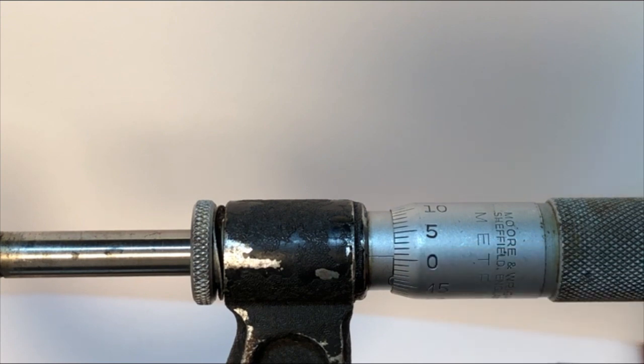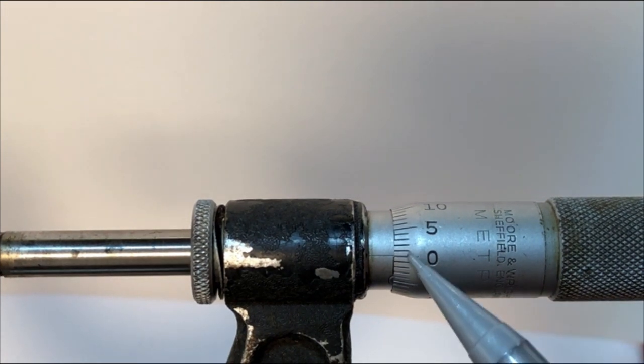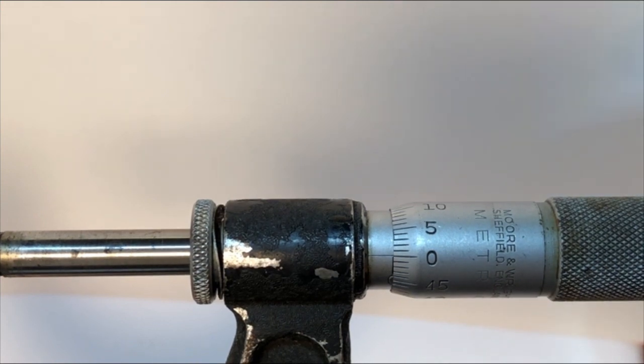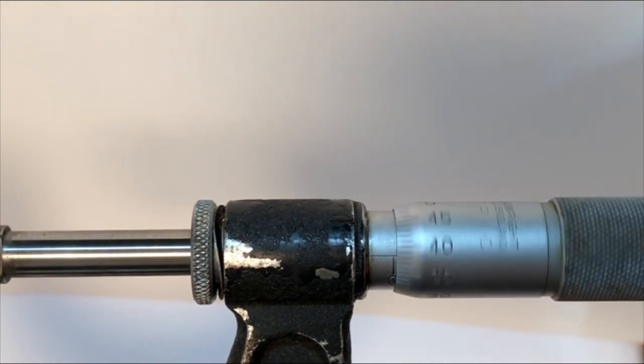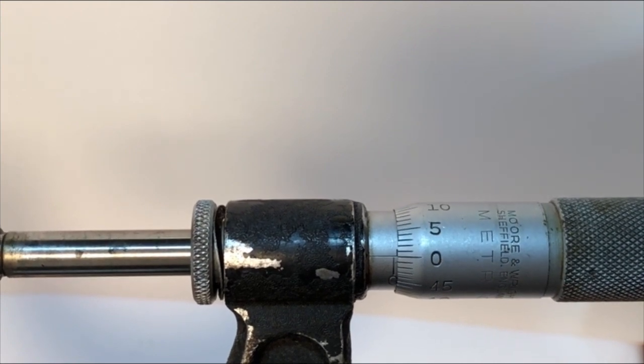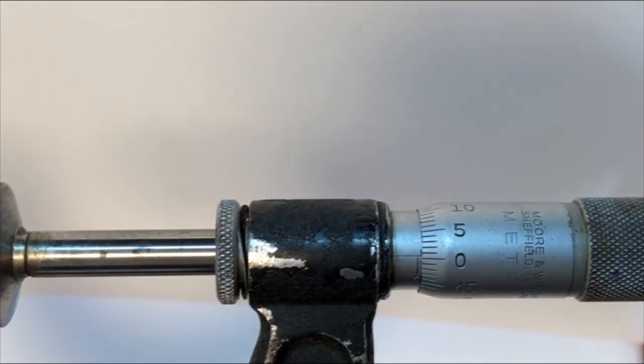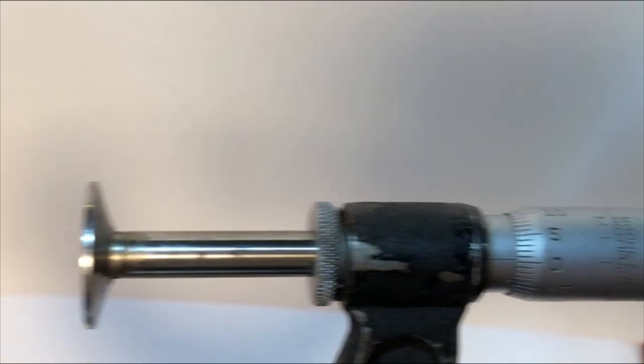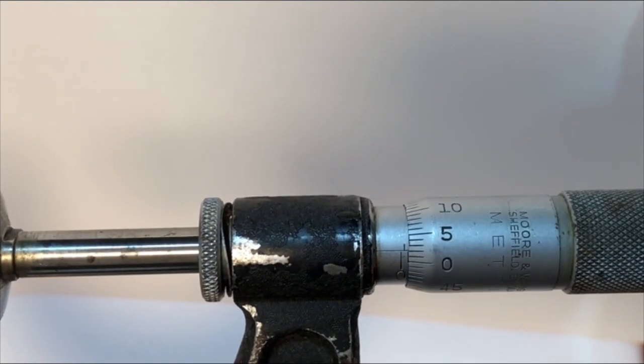So now for every number on this dial is 0.01 millimeter. So in this case, as I backed it up, that would be 0.05 millimeter all the way up to 50. And if you see along the back side here, you can see that the 50 line shows. So as I go across here, that would be one millimeter.